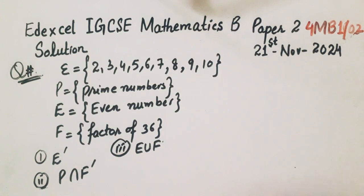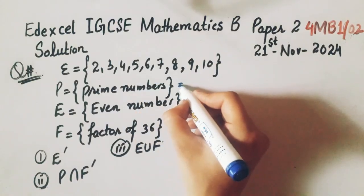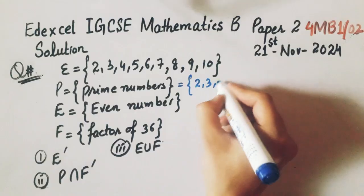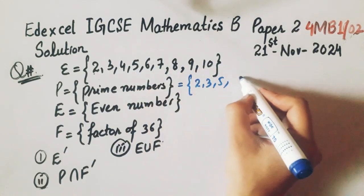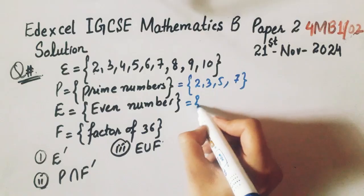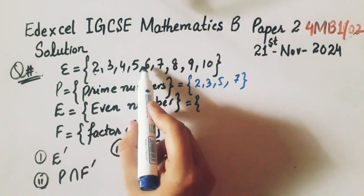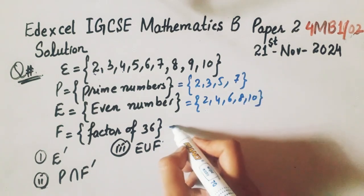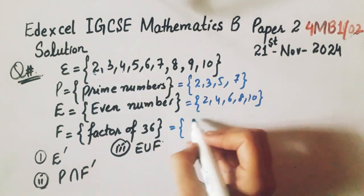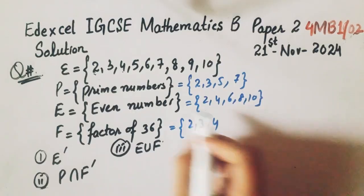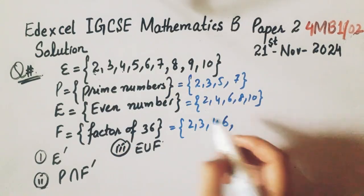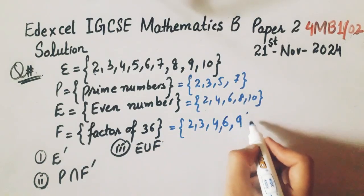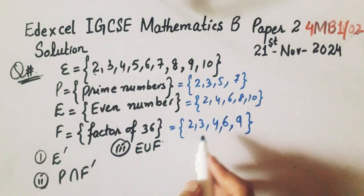So first of all we will write the elements of P prime from this set. So 2, 3, 5, 7. E is even numbers: 2, 4, 6, 8, 10. F is factors of 36: 2, 3, 4, 6, 9.